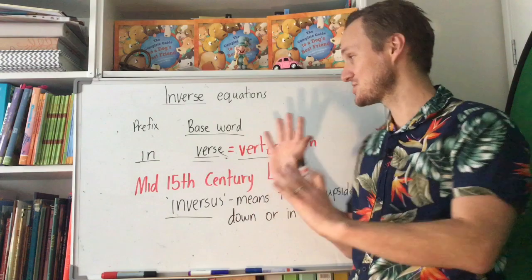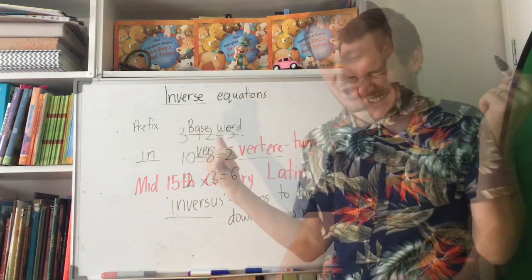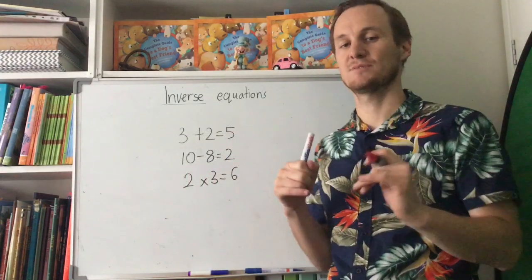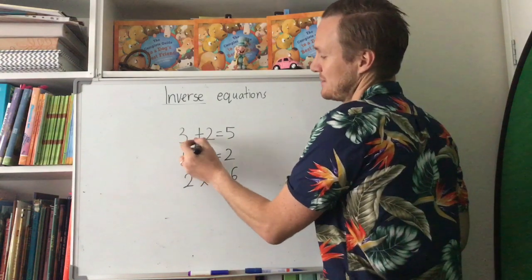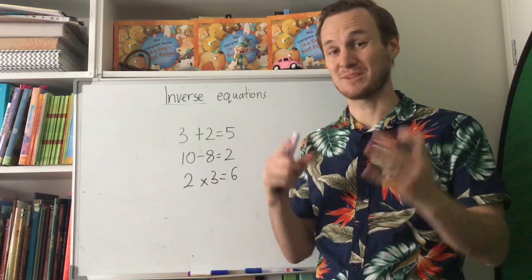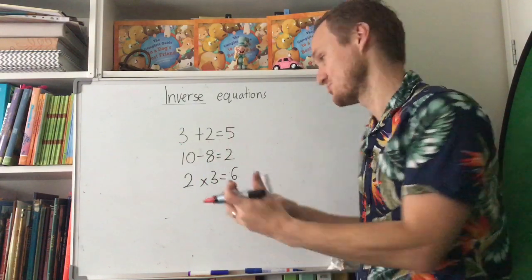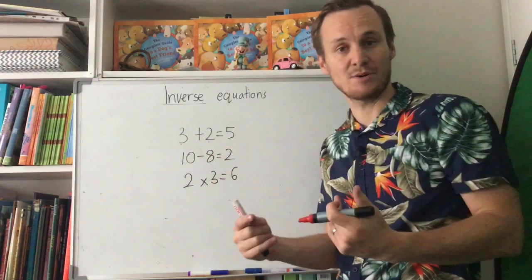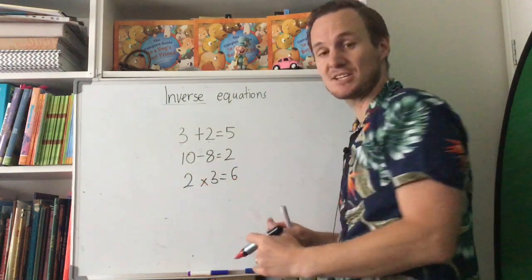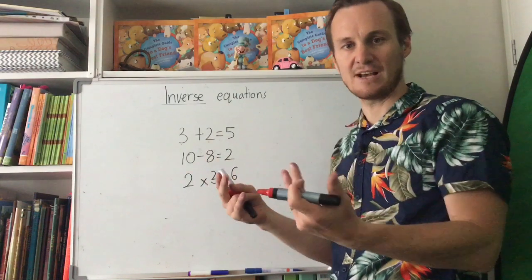Let me rub out the board and we'll get started. So remember, inverse equations — we're going to turn them backwards. With inverse equations you always do the opposite operation: if you have a plus question you turn it into subtraction, if you have subtraction you turn it into addition, if you have multiplication it turns into division, and vice versa.